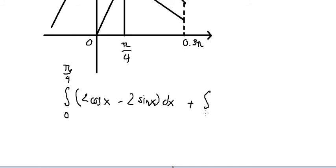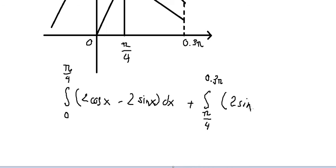The second integral is from π over 4 to 0.3π of two sine x minus two cosine x dx.